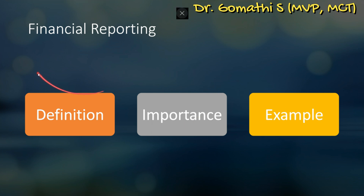Financial reporting provides insights into a company's financial performance and position. It involves generating balance sheets, income statements, and cash flow statements. Configuring Business Central to generate financial reports enables stakeholders to make informed decisions, analyze financial health, and comply with reporting requirements.